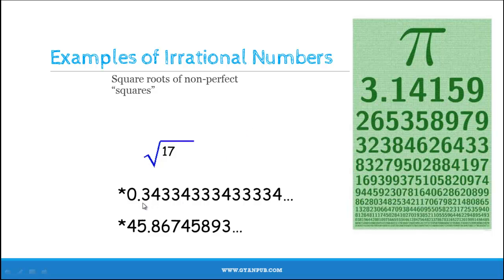Let us have a look at some more examples. The first example is 0.34334333... where no digit is repeating itself in a pattern. The next example is 45.86745893... In this decimal expansion, it is non-terminating and non-repeating. Hence, these two are examples of irrational numbers.